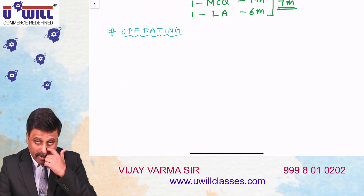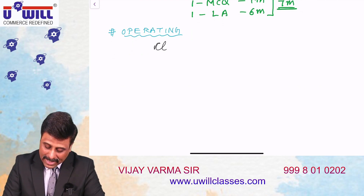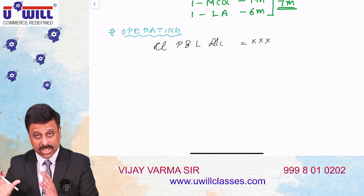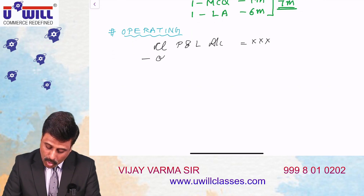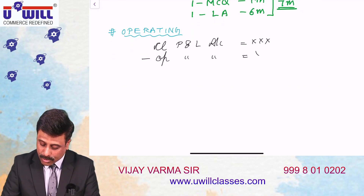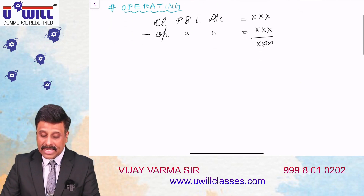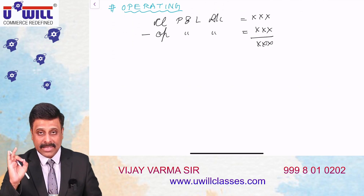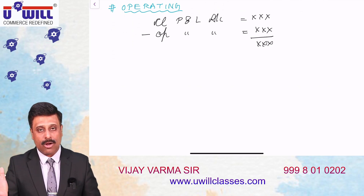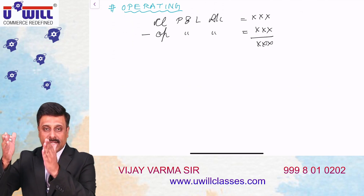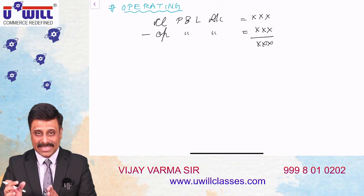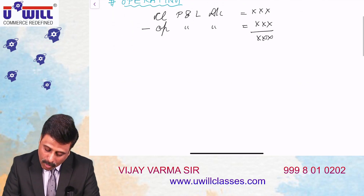For cash flow from operating activities, we start with the closing balance of the profit and loss account, then minus the opening balance of the profit and loss account. What we obtain is profit during the year. Under reserves and surplus in the balance sheet, you'll find both closing and opening balances of the P&L account. Current year gives closing balance, last year gives opening balance, and the difference is profit during the year.